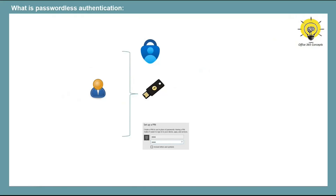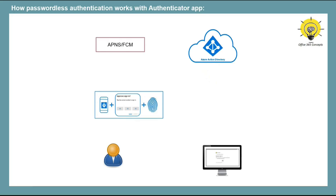Let's understand what exactly happens in the background when a user is authenticated using Microsoft Authenticator app instead of a password. When a user tries to access an application, he will enter his username. The request will go to Azure Active Directory, which will find that this user has passwordless authentication enabled using the Authenticator application.